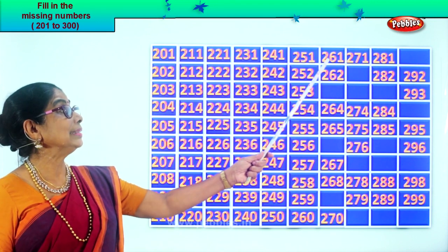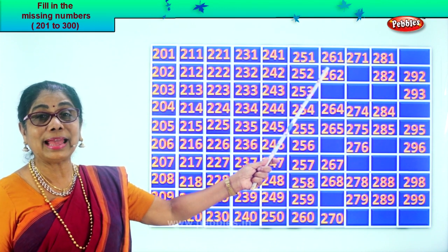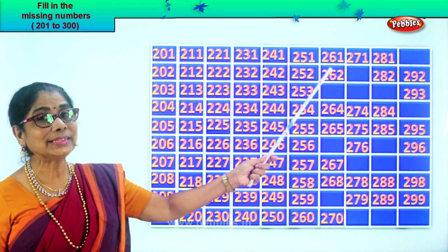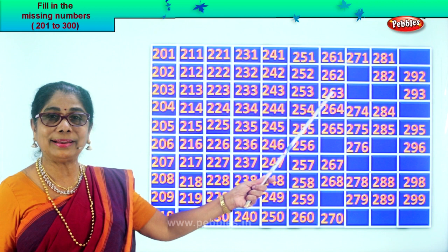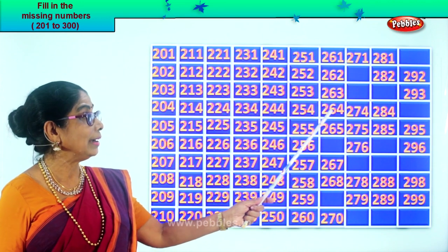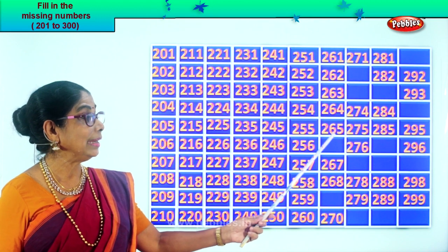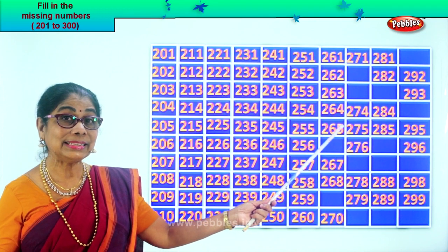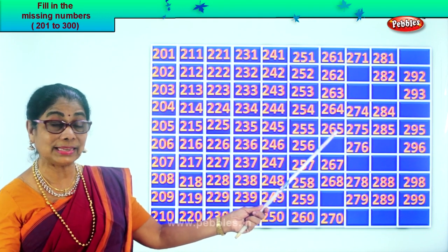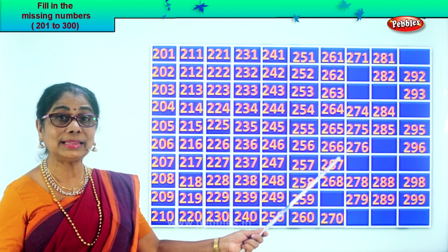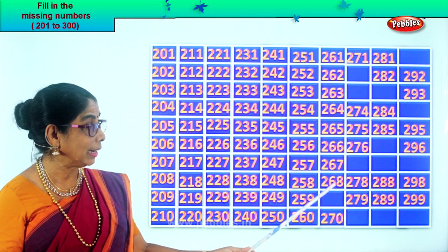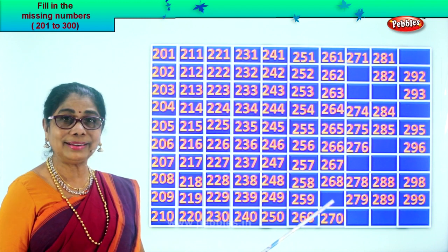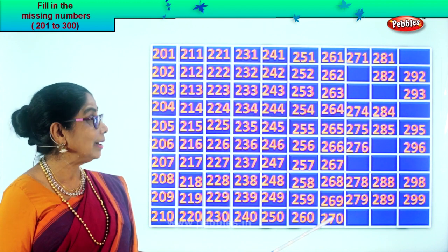After that: two hundred and sixty-one, two hundred and sixty-two. After sixty-two — sixty-three. So you write two hundred and sixty-three. Two hundred and sixty-four. Two hundred and sixty-five. After sixty-five — sixty-six. So two hundred and sixty-six. Two hundred and sixty-seven. Two hundred and sixty-eight. After sixty-eight — sixty-nine. Two hundred and sixty-nine. Two hundred and seventy.